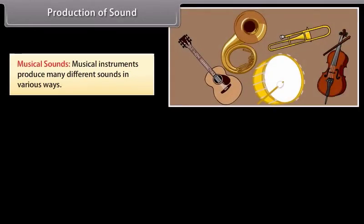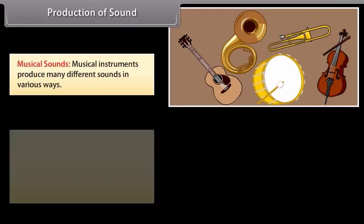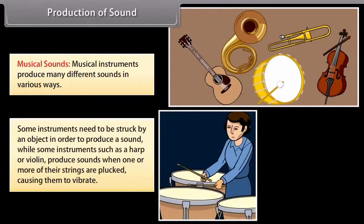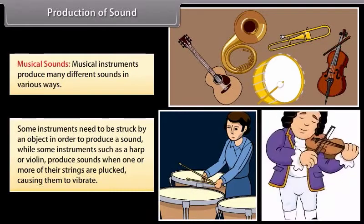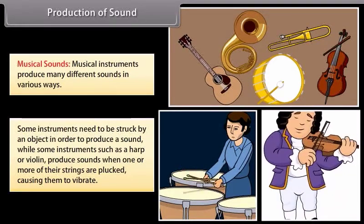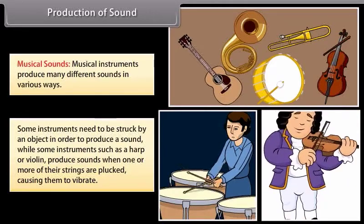Musical sounds. Musical instruments produce many different sounds in various ways. Some instruments need to be struck by an object in order to produce a sound, while some instruments such as a harp or a violin produce sounds when one or more of their strings are plucked, causing them to vibrate.